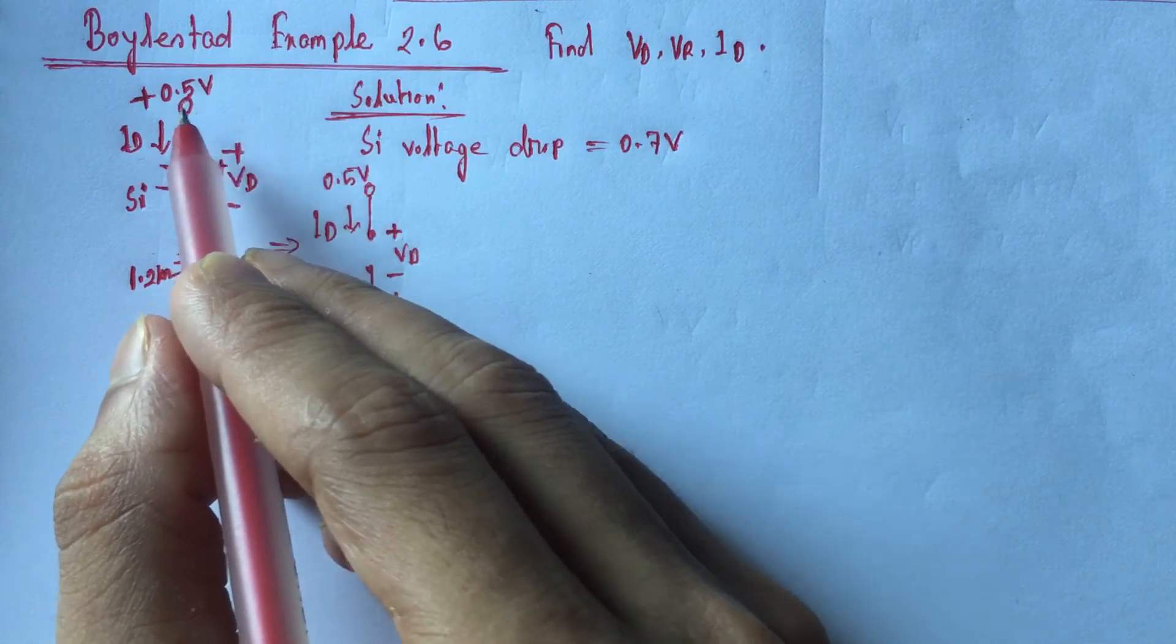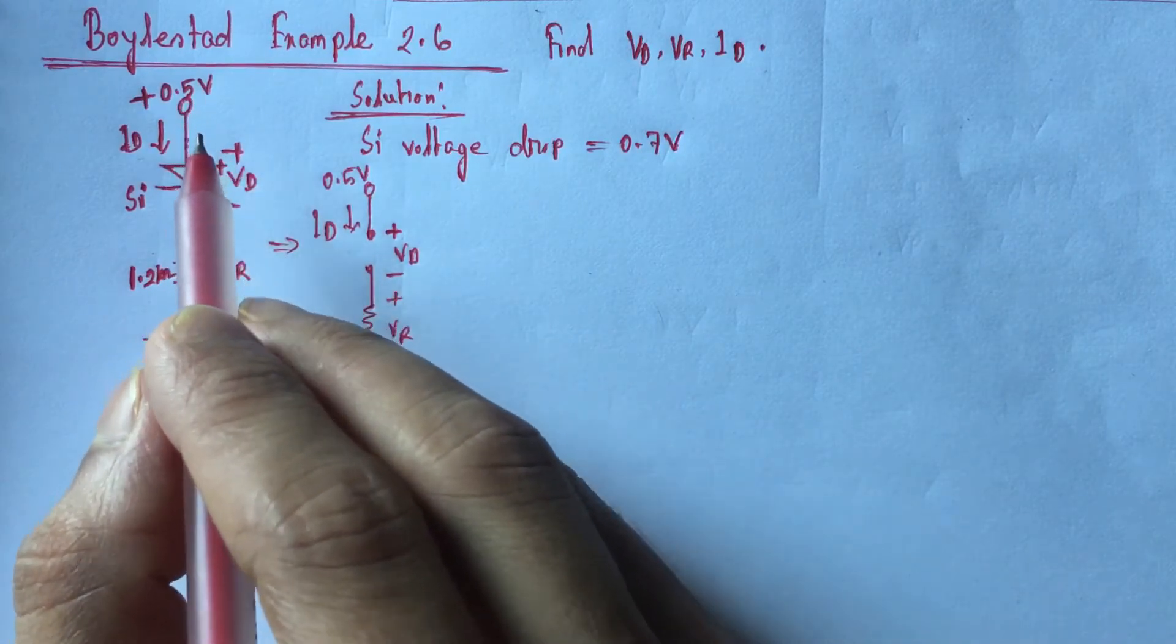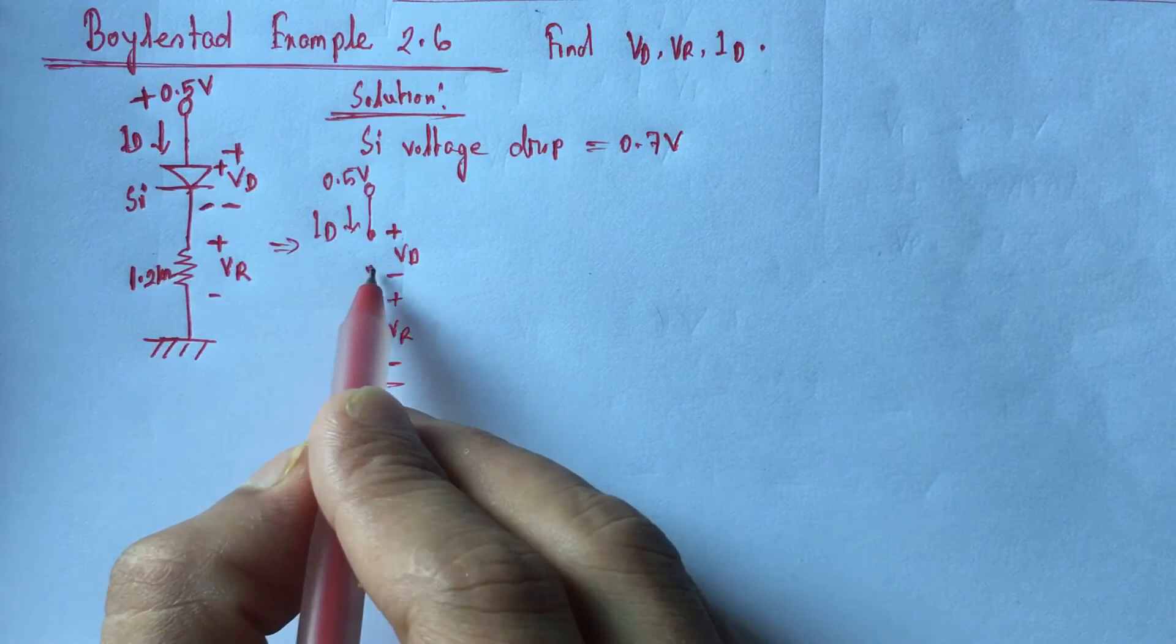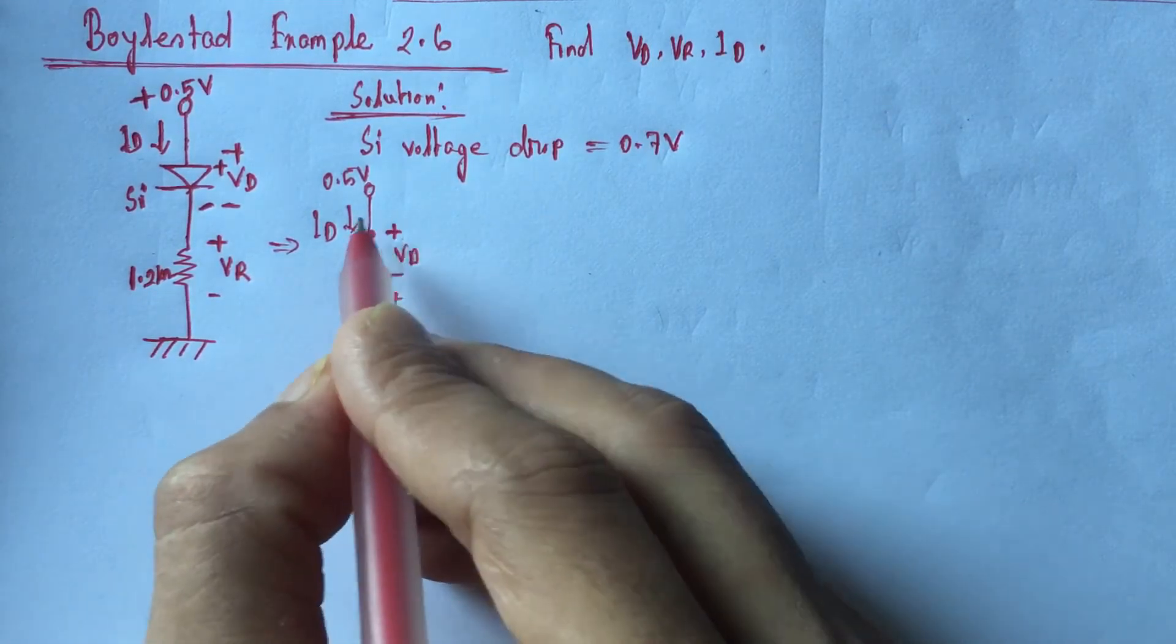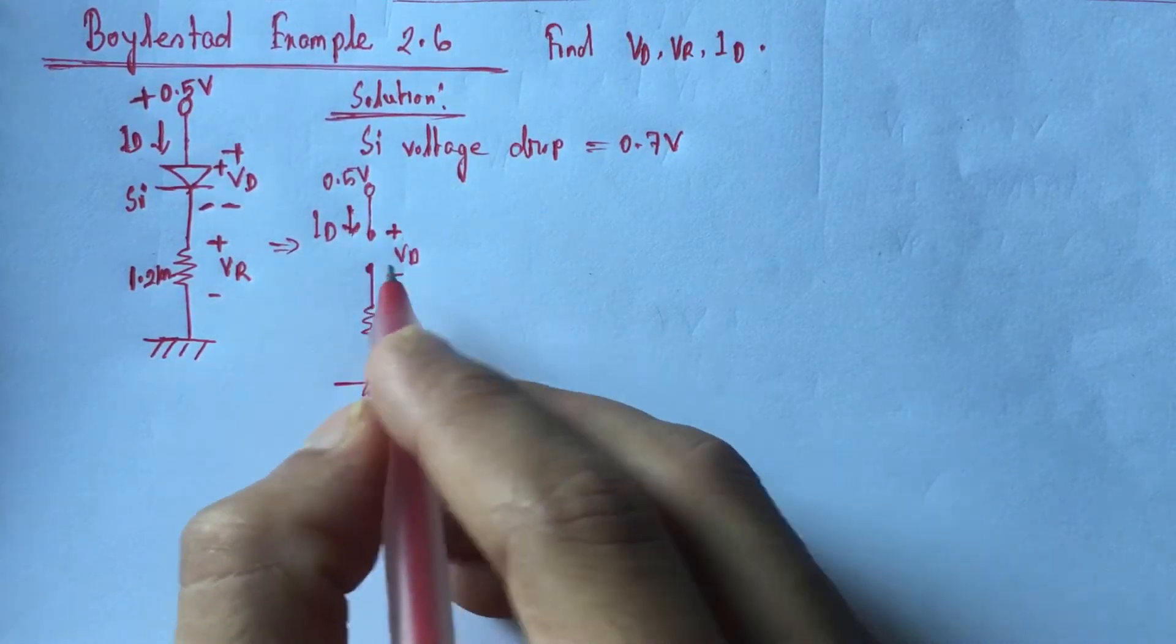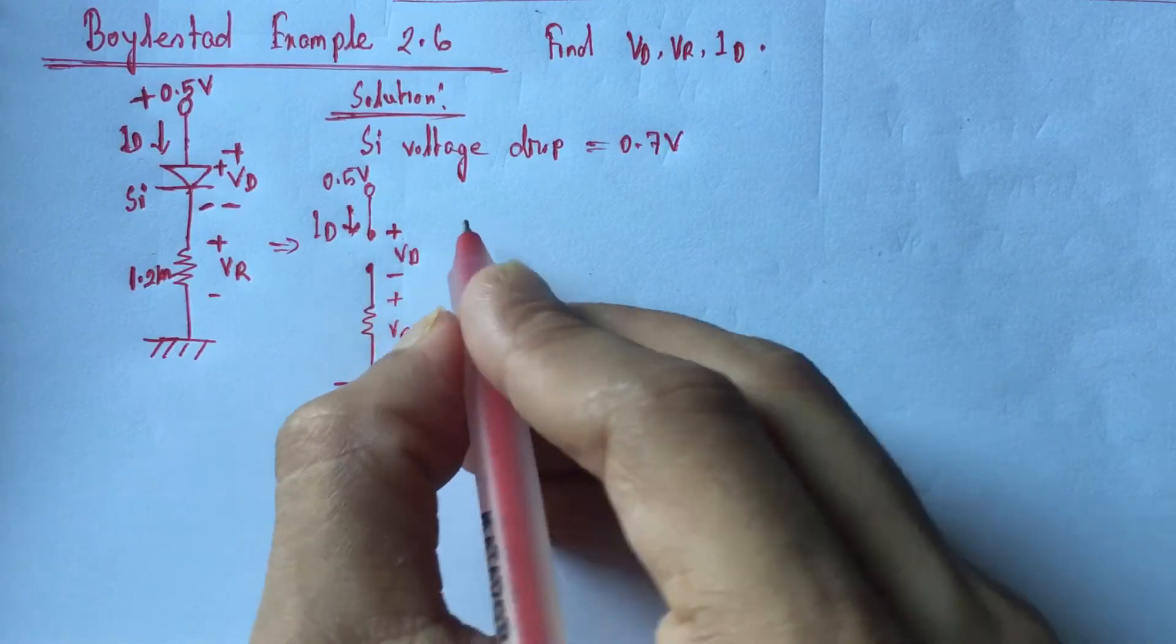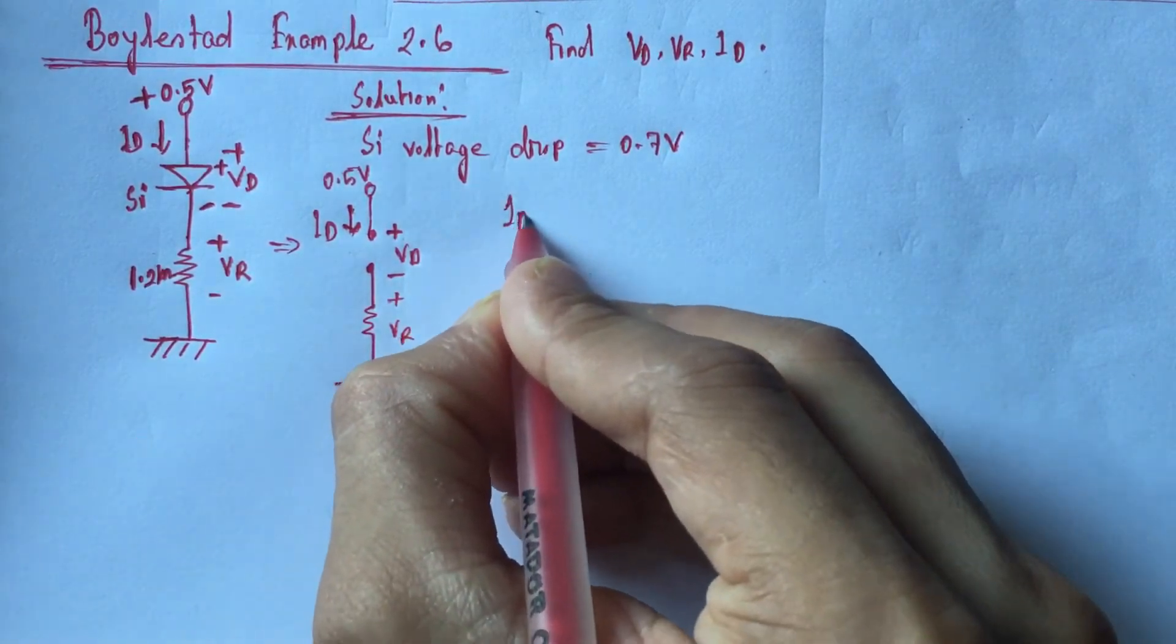So the diode is off and the off diode is replaced by an open circuit. Now since the circuit is open, so current flowing through the circuit is 0, that is ID is equal to 0 ampere.